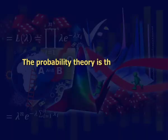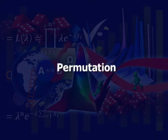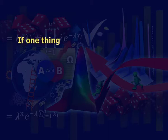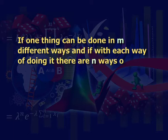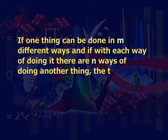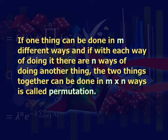The probability theory is the mixture of set theory and counting. In counting, mainly two things called permutations and combinations play a vital role. Permutations can be explained as: if one thing can be done in m different ways and if with each way of doing it there are n ways of doing another thing, the two things together can be done in m cross n ways — this is called permutations.